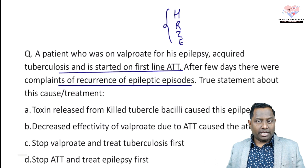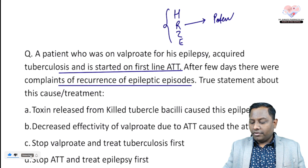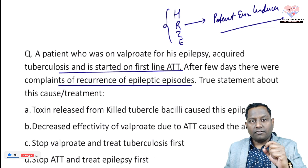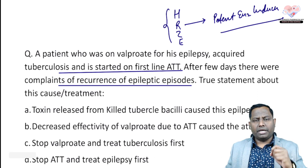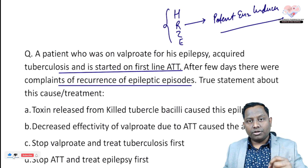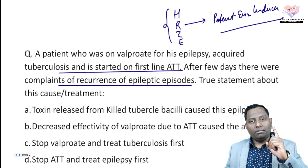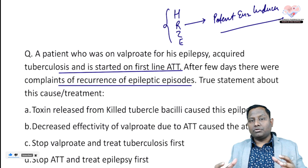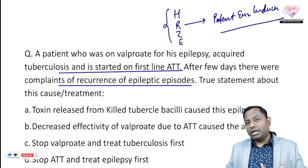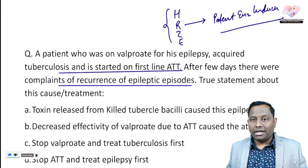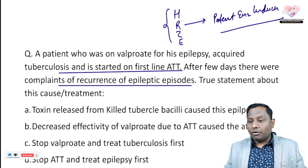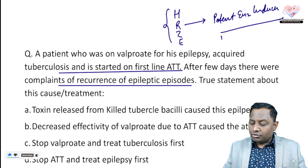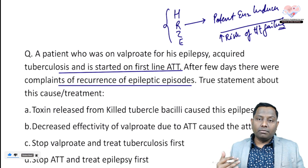Option A: toxins released from killed tubercle bacilli cause epilepsy — that's not it. Rifampicin is one of the very potent enzyme inducers. In general pharmacology, drug interaction questions on enzyme inducers and enzyme inhibitors are very commonly asked. Rifampicin being a potent enzyme inducer always increases the risk of treatment failure — the availability of the drug in the body is for a shorter duration.